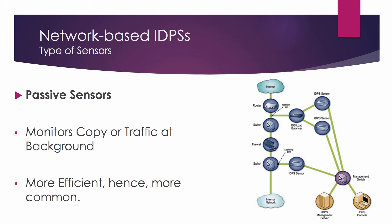Since passive techniques monitor a copy of the traffic, they typically provide no reliable way for a sensor to stop the traffic from reaching its destination. In some cases, a passive sensor can place packets onto a network to attempt to interrupt a connection, but those methods are generally less effective than inline methods.